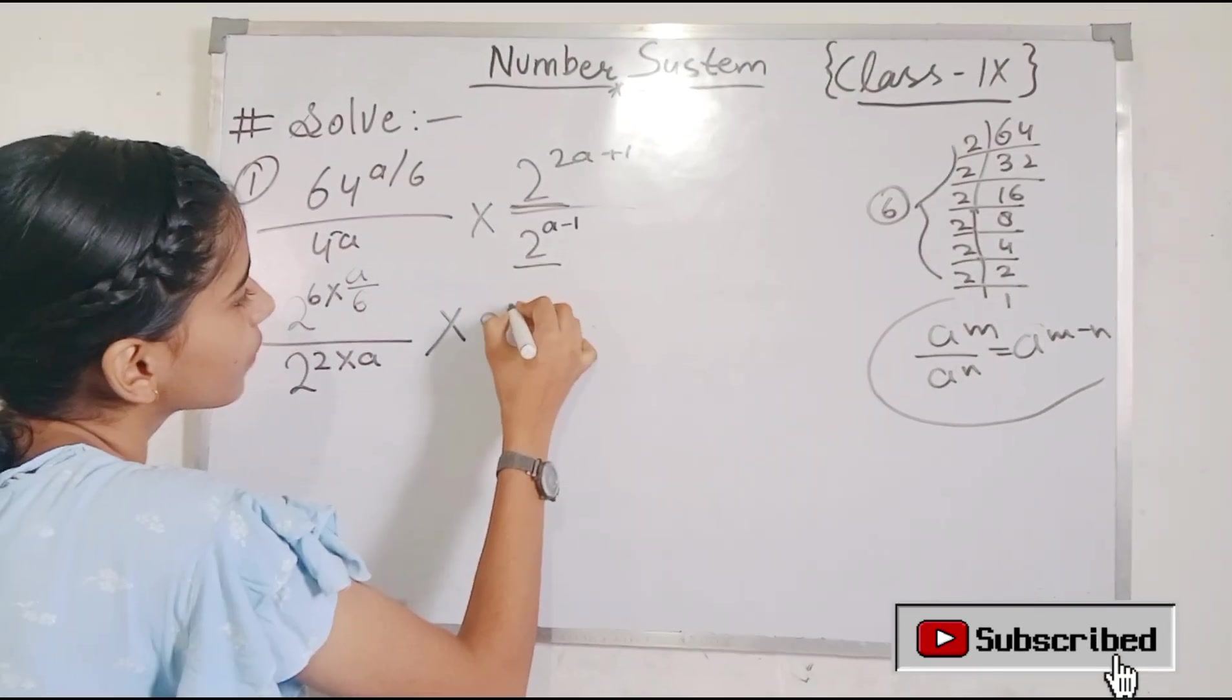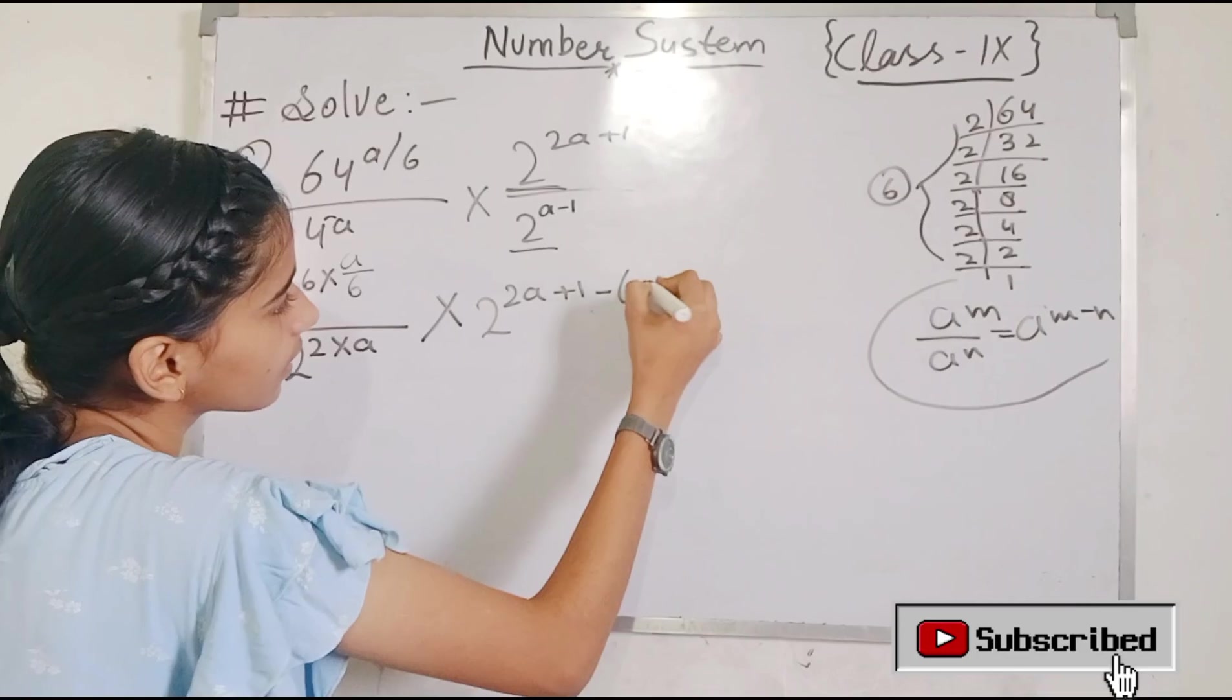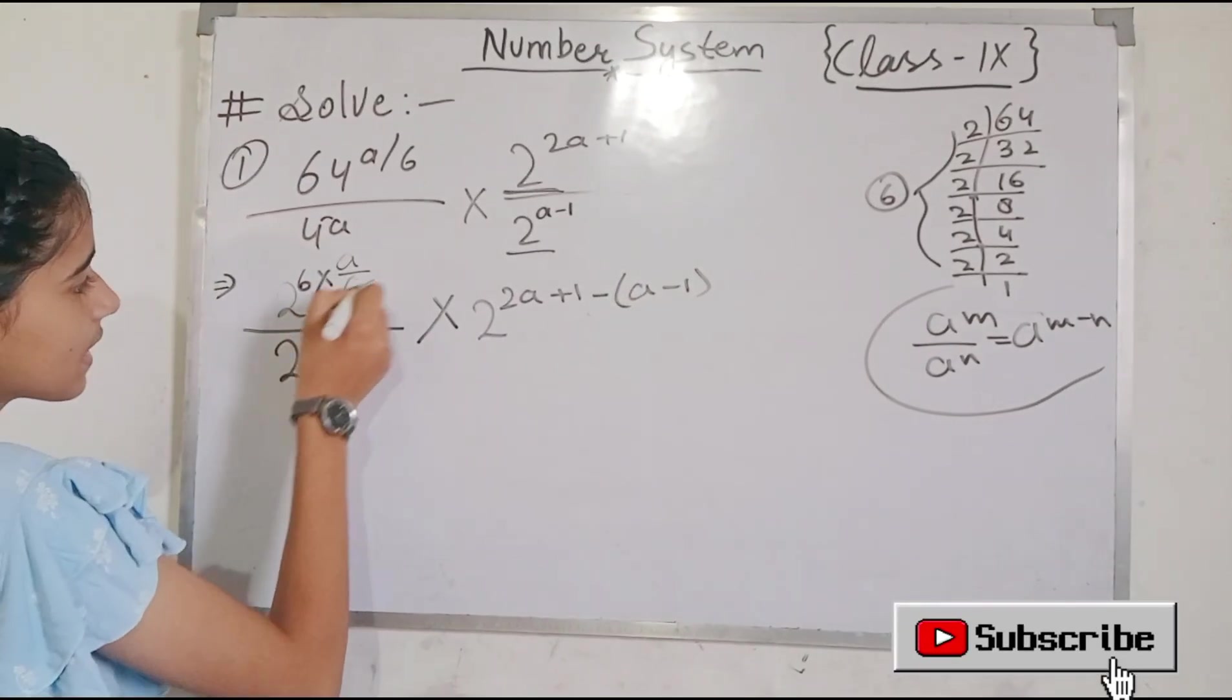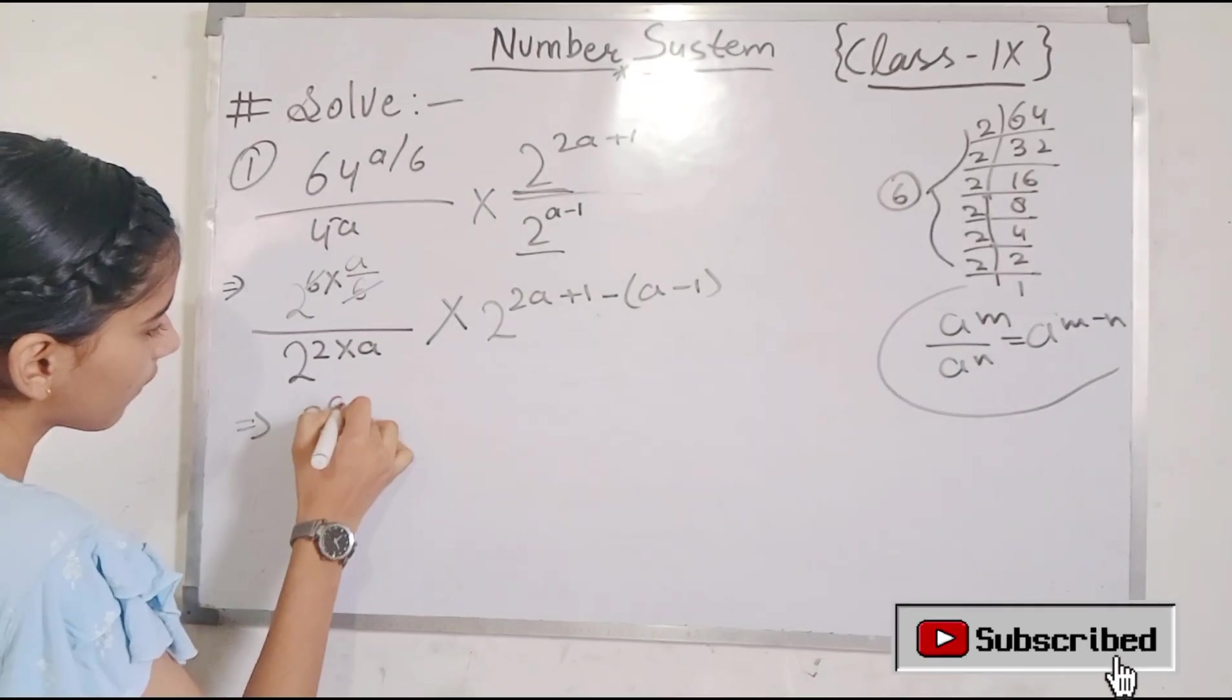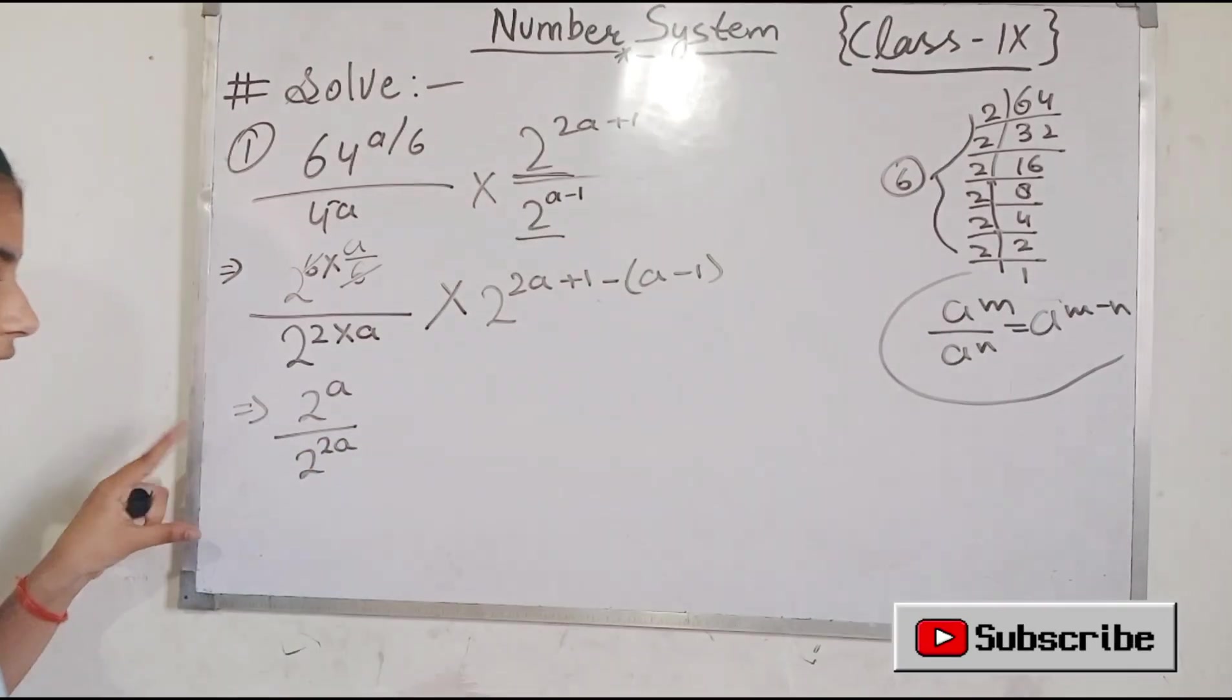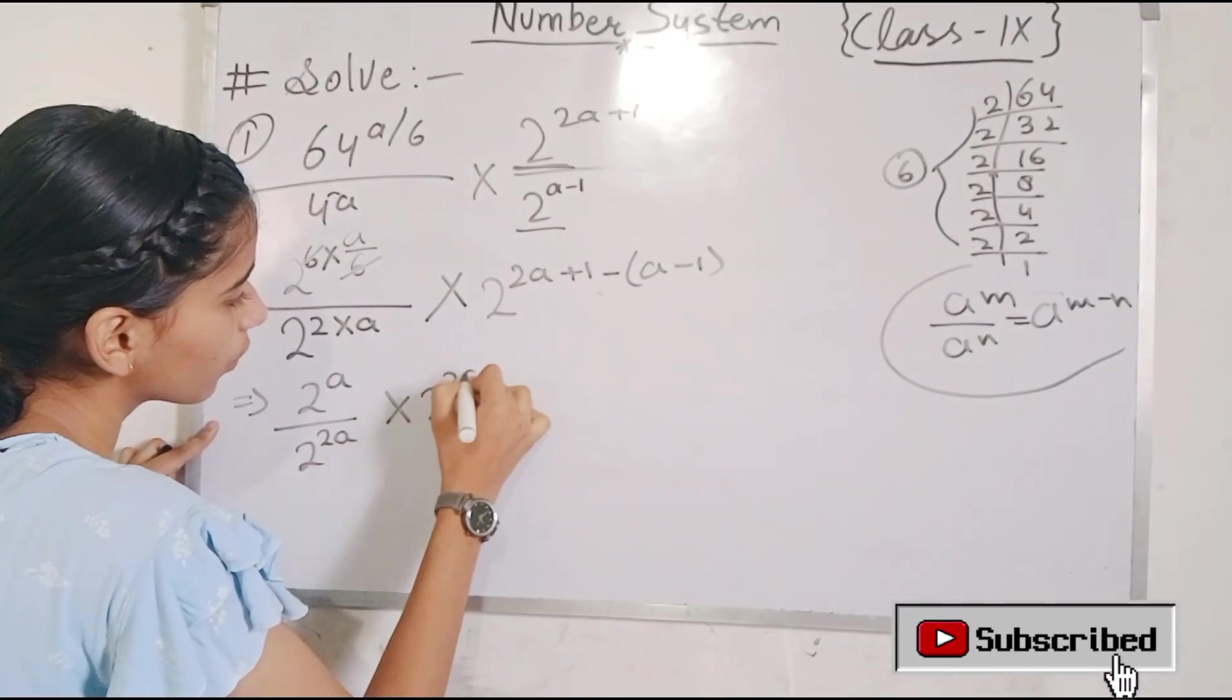So 2a plus 1 minus bracket in a minus 1. How to change this? Because now we can do all this. 2 is to power a with 2 power 2 apparently. Now plus 2a means 2a plus 1.